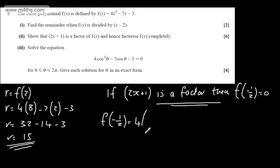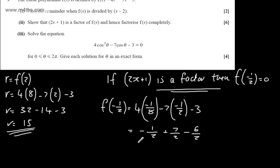So f of minus 1 half gives me 4 lots of minus 1 half cubed, which is minus 1 over 8, minus 7 lots of minus 1 half, minus 3. So we can see that's minus 1 half plus 7 over 2, and then I'm going to write this as 6 over 2. From this, we've got minus 7 over 2 plus 7 over 2, which gives us 0. So we can say that 2x plus 1 is a factor.